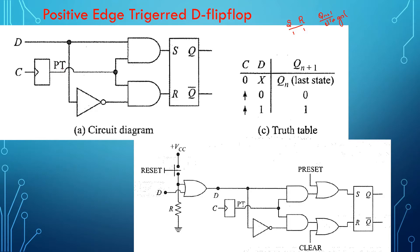There are no changes with respect to the truth table between a latch and a flip-flop. With a positive edge trigger, the clock input is shown pointing upward. When D is made 0, the flip-flop goes to the reset state. This is a transparent flip-flop — whatever data you provide at the input side is reflected at the output side. If you provide 0, the output becomes 0; if you provide 1, the output becomes 1.